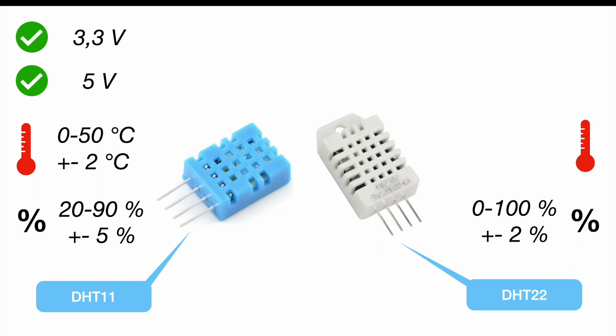For the temperature the difference is even more significant. We can measure from minus 40 to 80 degrees at plus minus 0.5 degrees. Talking about voltage we can accept 3.3 volts as well as 5 volt tolerant. So that are all the measurement ranges and accuracies on the paper.